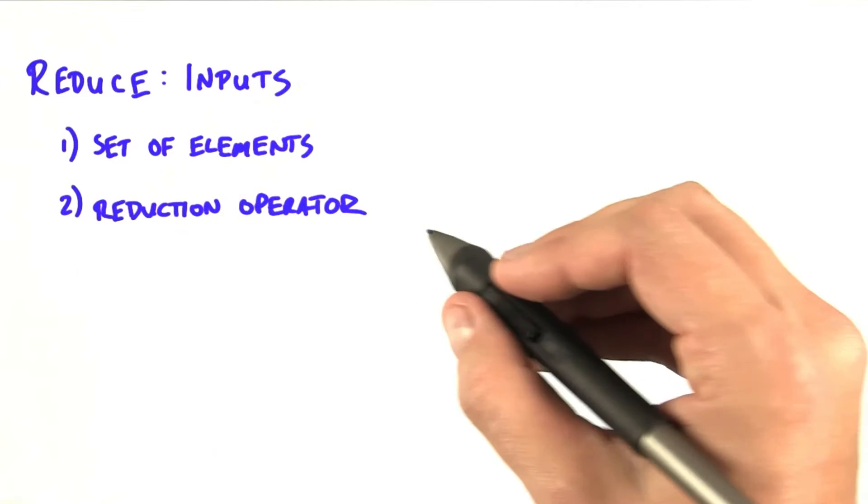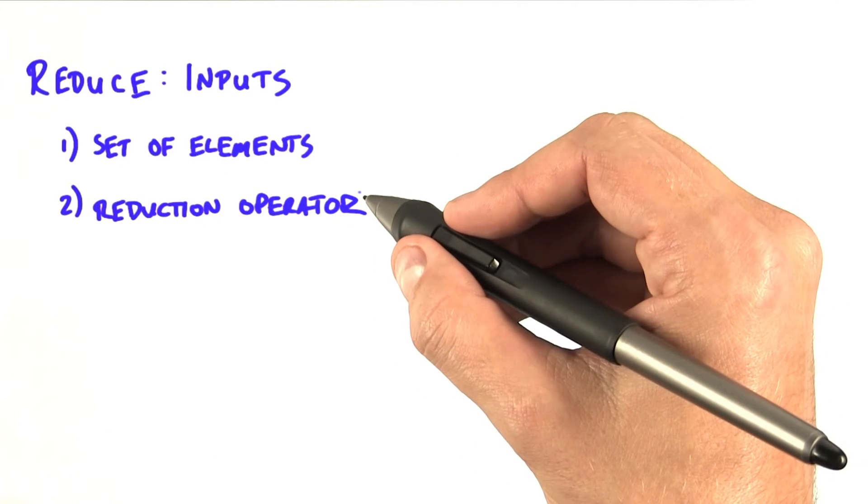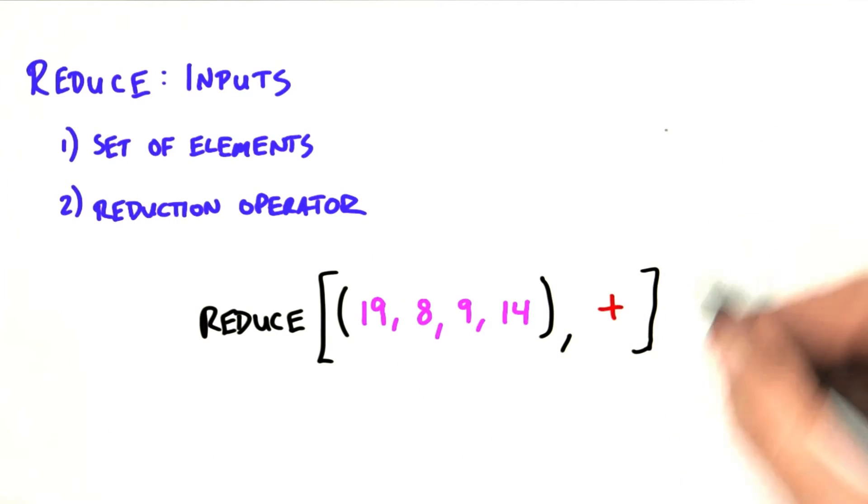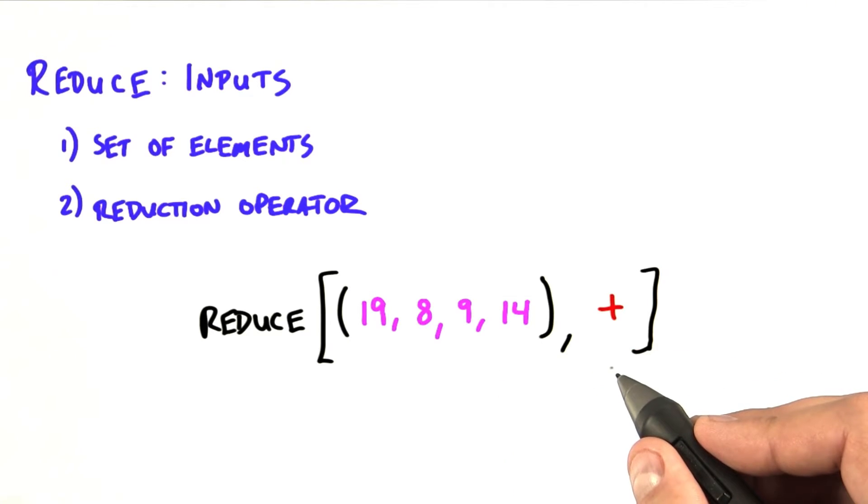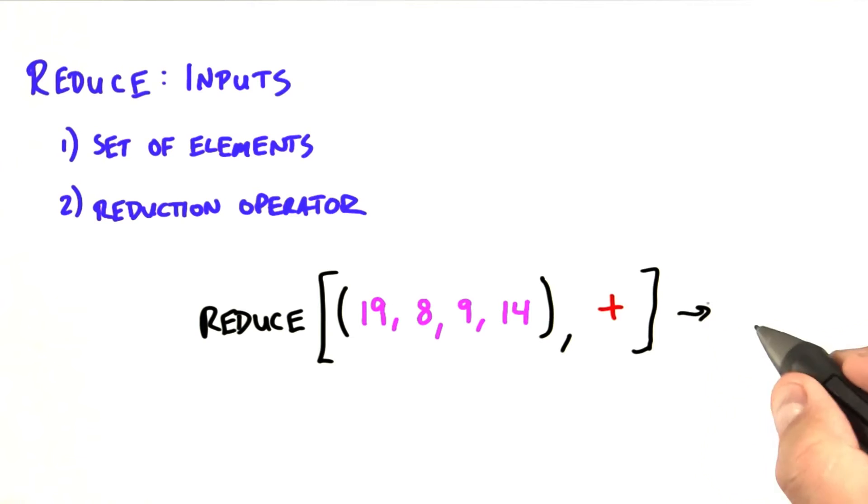The second input is a reduction operator that will operate on the elements in this array. For example, we have a list of numbers here, and we have a reduction operator of plus, and the reduction operator will sum them all up.